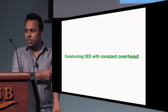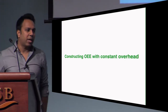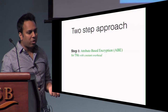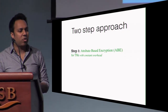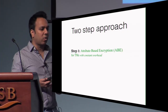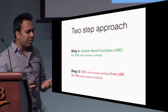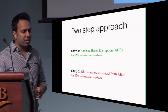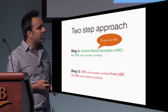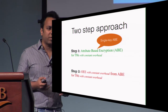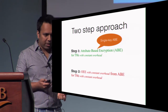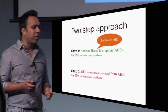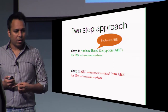Let me briefly go over how we construct an oblivious evaluation encoding with constant overhead. We follow a two-step approach. The first step is to construct attribute-based encryption for Turing machines with constant overhead. The second step is to compile it into an OE scheme while preserving the efficiency properties. In fact, the attribute-based encryption scheme we need is only single-key — we only need security for a single attribute key. In this talk, I'll just skip the second step and briefly talk about the first step of constructing an ABE scheme for Turing machines.